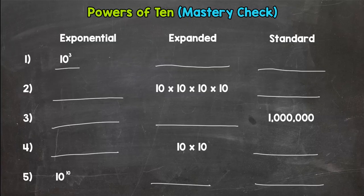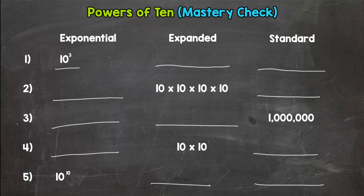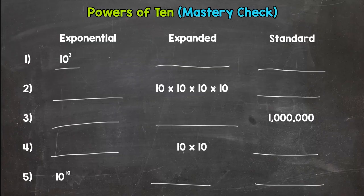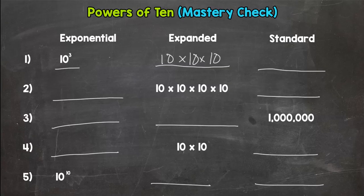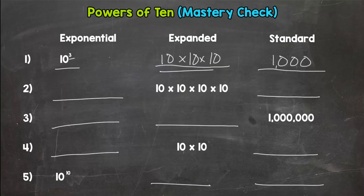All right, welcome back. Hopefully you have those one through five filled out, you should have two answers for each. So let's do number one here, ten to the third power or ten to the power of three. Expanded out would be ten times ten times ten. Remember everything matches: exponent of three, three tens expanded out, and then your answer for standard form you should have three zeros, so one thousand.